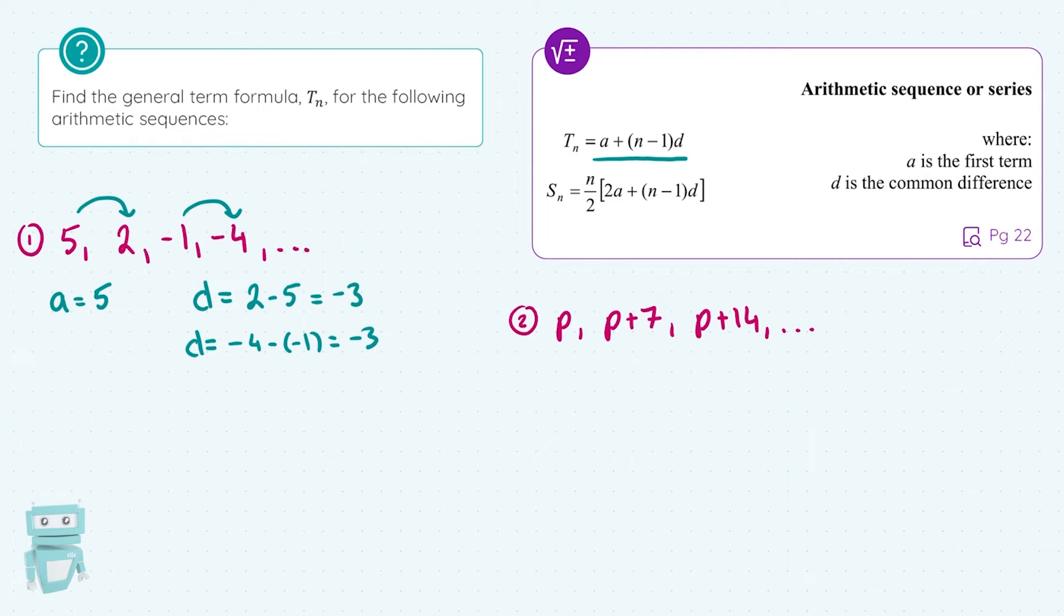Now I can put these figures into the formula. I'm just going to say that TN equals A, which is 5, plus N minus 1, times D, minus 3. I'm going to multiply out the right hand side and tidy it up. And here I have it. TN equals 8 minus 3N. This formula will give us any possible term in the sequence. The general representation of any term looks like that.